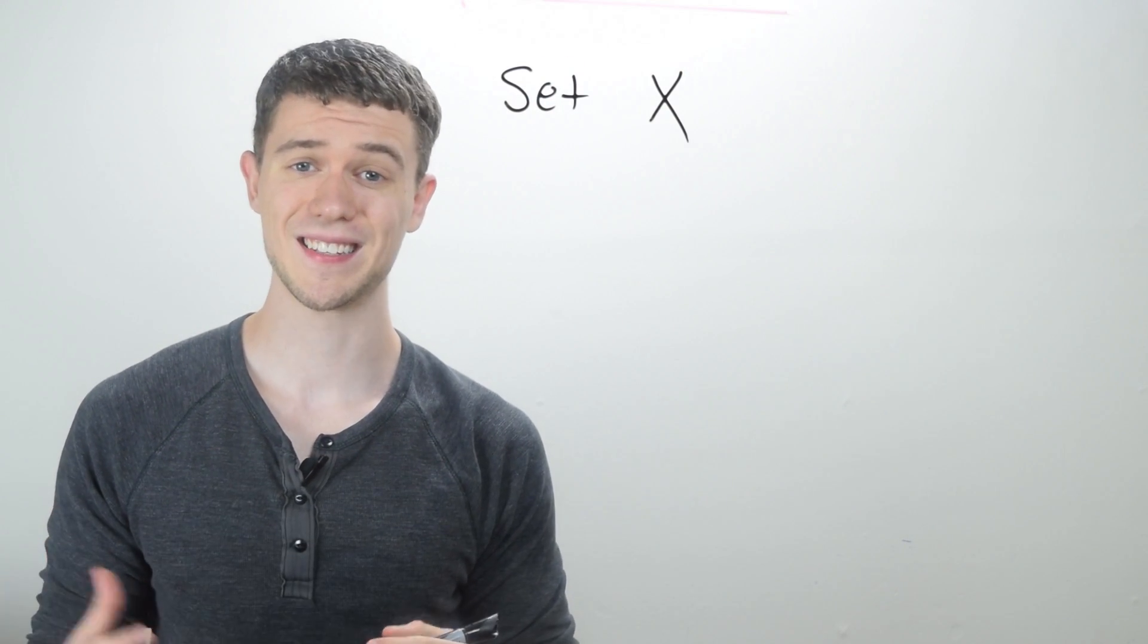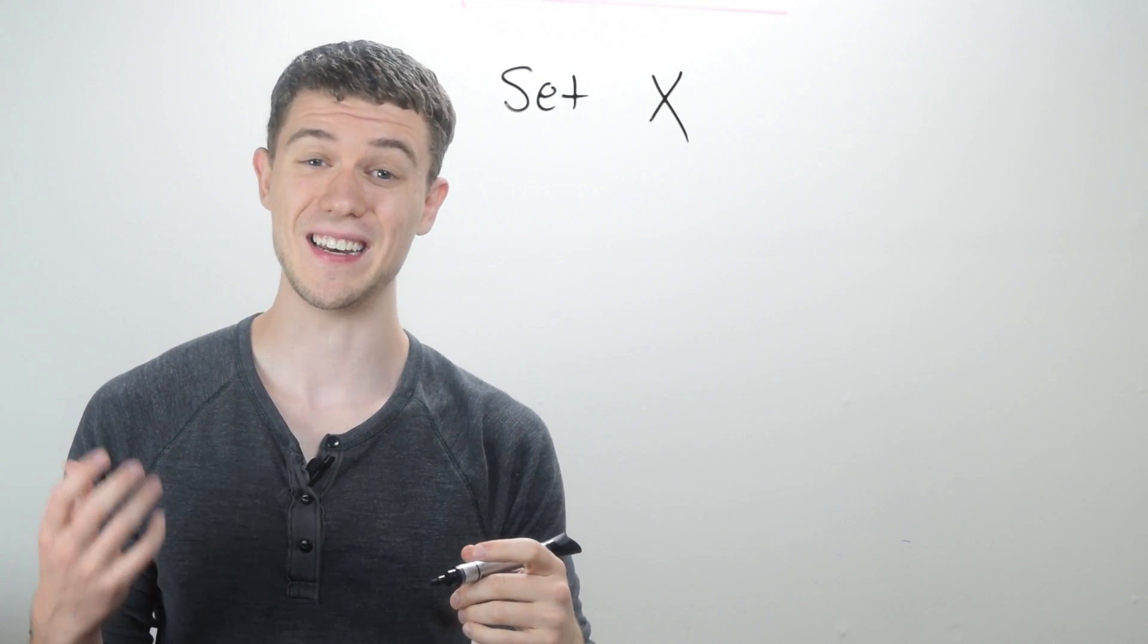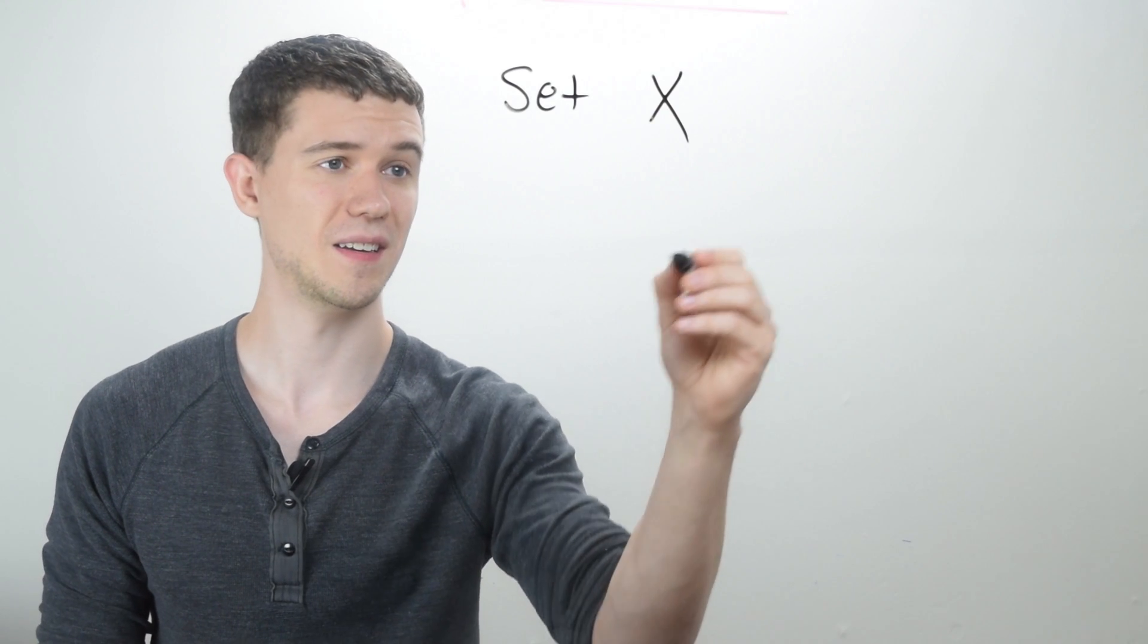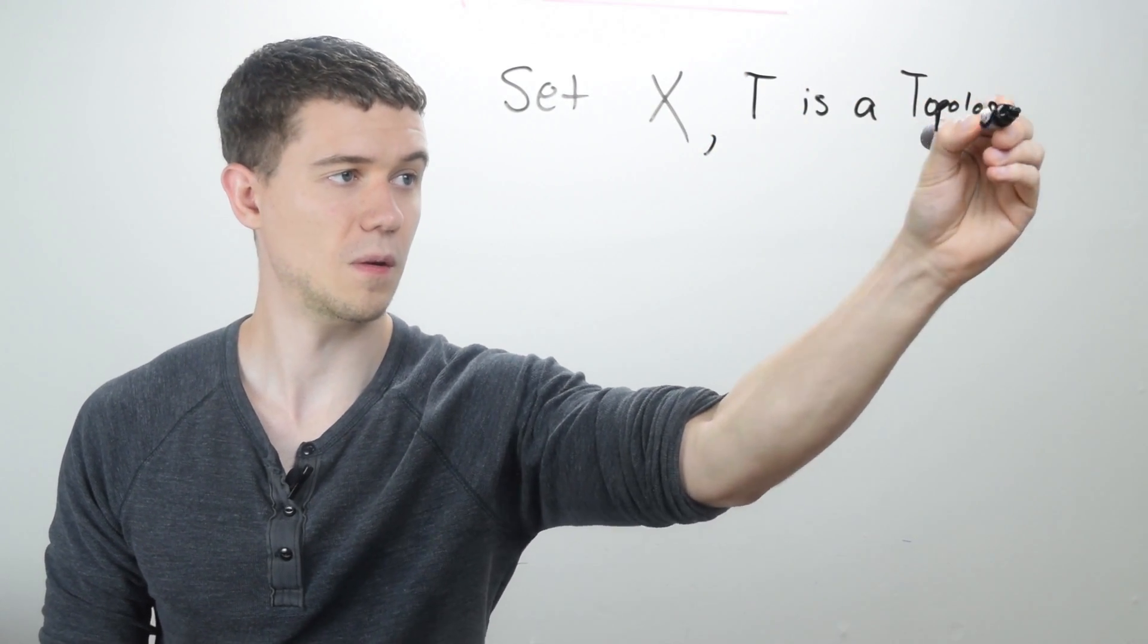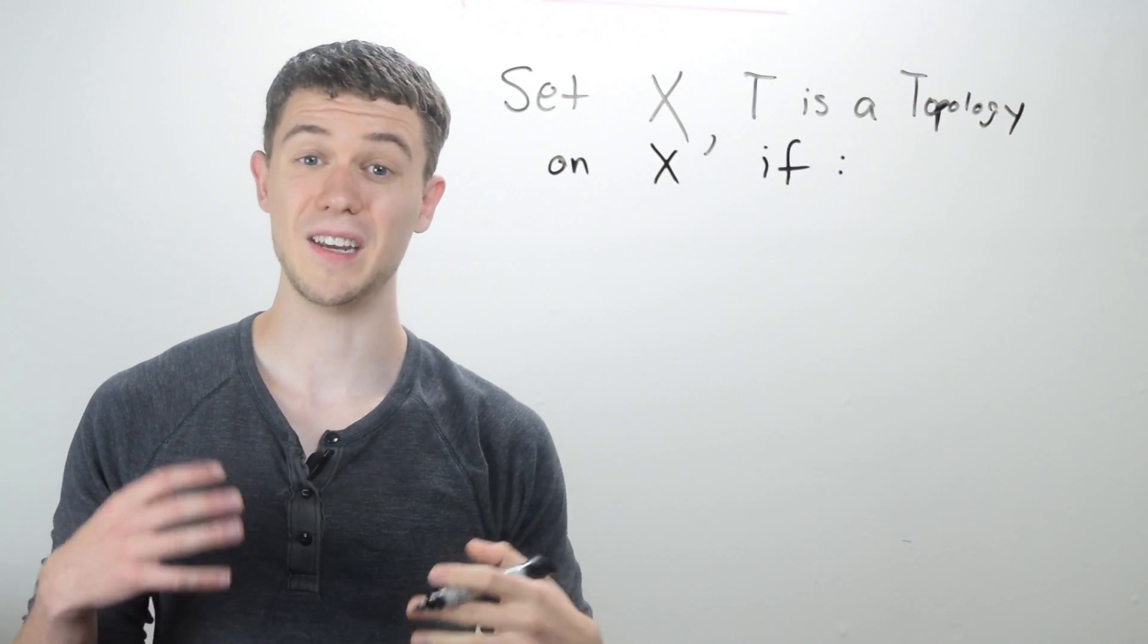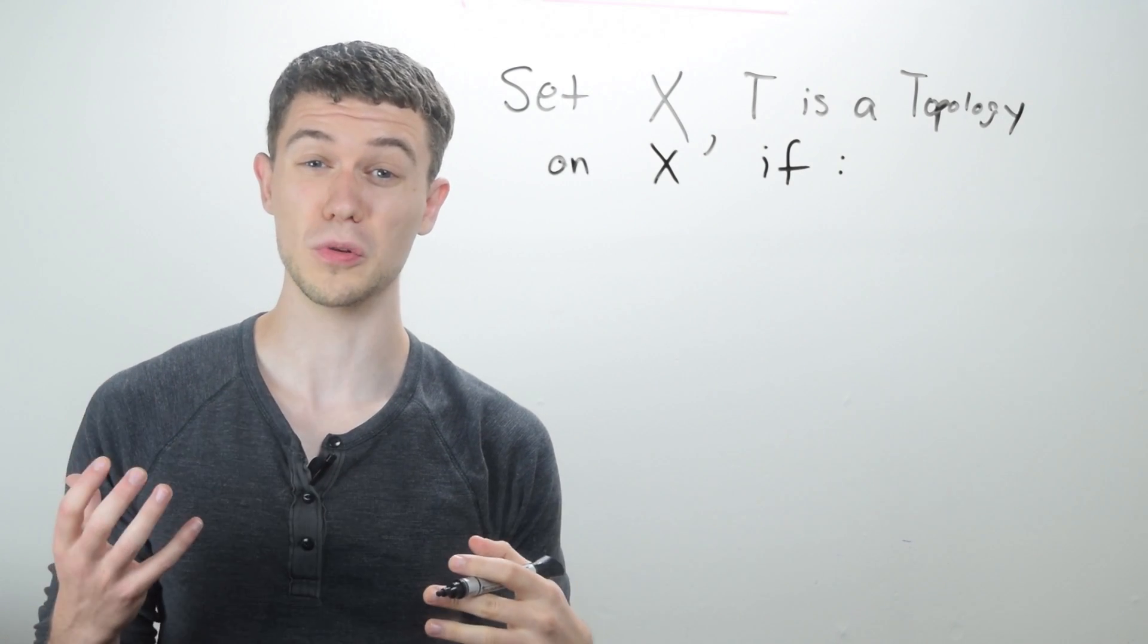Basically, a topology is a set of sets satisfying three rules. So first we'll need a set, call that set X, and we'll say T is a topology on X if these following three things hold.